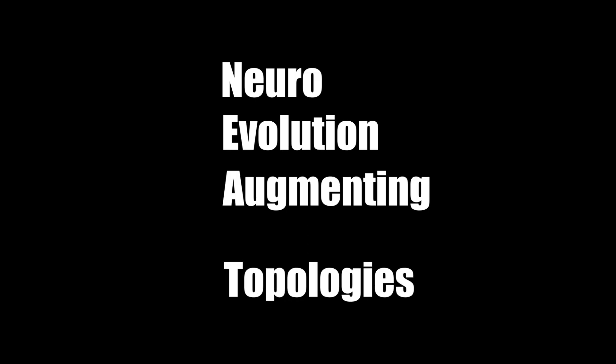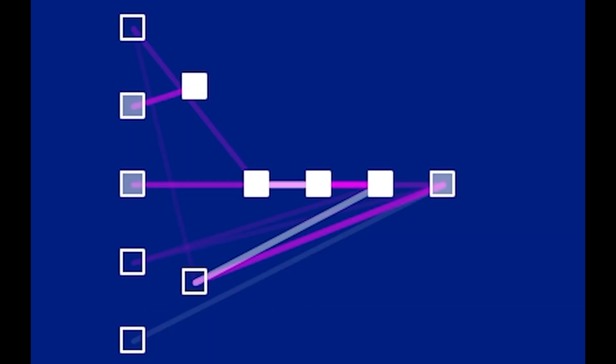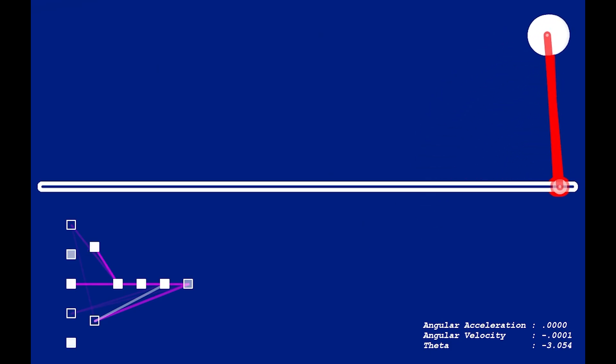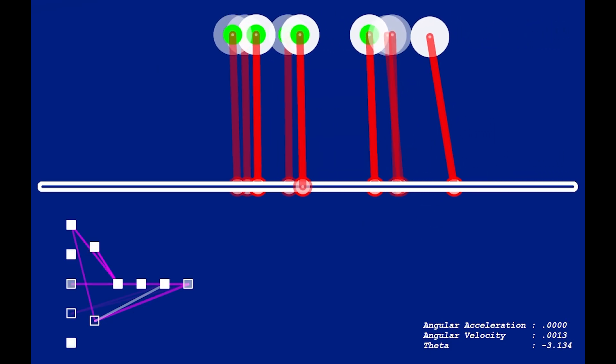This video looks at implementing the NEAT solution to the same problem, seeing what the required minimum number of hidden neurons are and what the topology will look like. I also wanted to see if a solution could evolve which would flip up the pendulum from a normal starting position and balance it in the middle of the track.